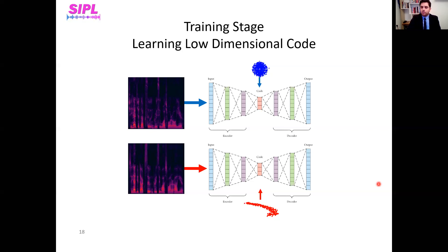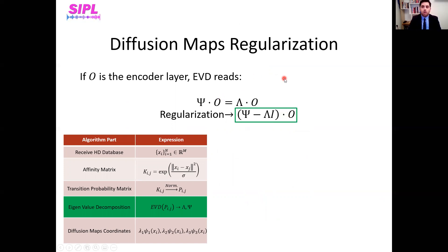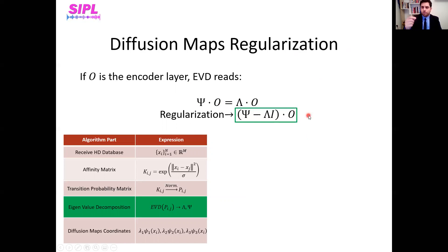How do we constrain the diffusion maps into the middle layer? We look at the term from which we derive the eigenvalue decomposition values, and it is essentially reduced to solving a specific equation for a matrix O. If we force the middle layer of the architecture to coincide and satisfy this equation, we can simply turn it into a regularization term and add it to the training process.